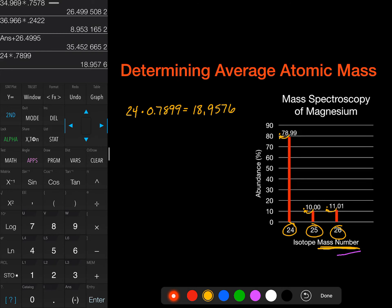And then for magnesium 25, we're going to have 25 times 0.1000. I can do that in my head. It's 2.5.